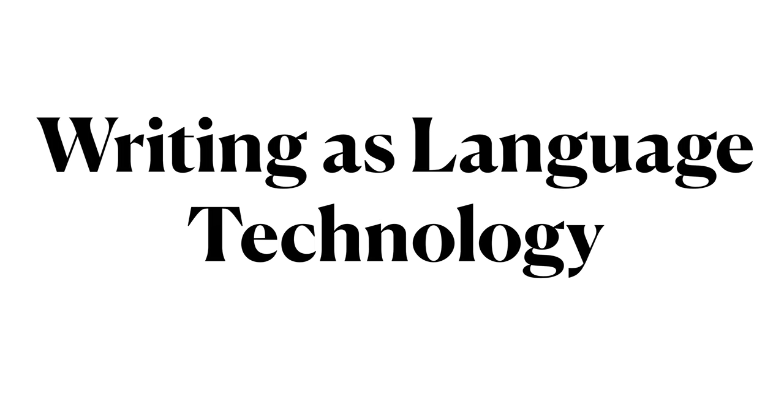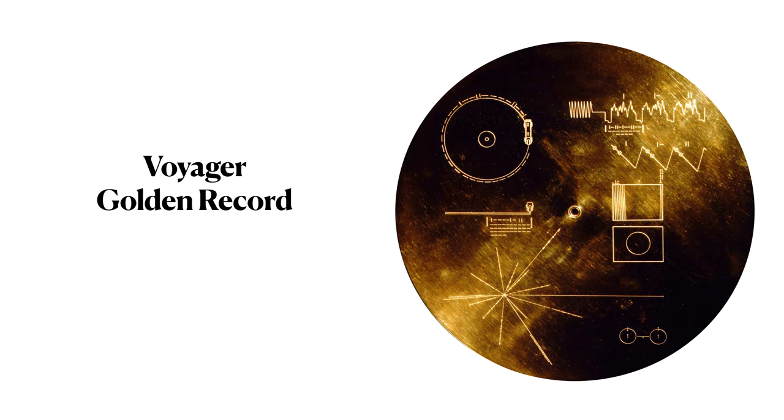We now continue our examination of writing as a language technology, specifically looking at the Voyager Golden Record as a prime example of attempts to communicate using a writing system symbols that are not conventional.